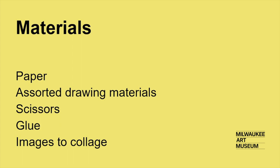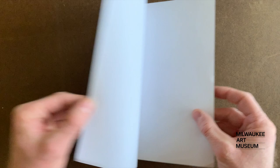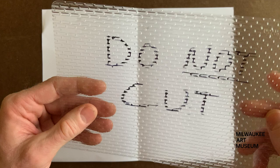Think about all the things that make your community special. Look for pictures of these things in magazines or newspapers, and if you can't find them, draw them. Start with a single sheet of paper that you fold in half — each half will be a different space. The left side will represent indoor spaces, and the right side will be outdoor spaces.